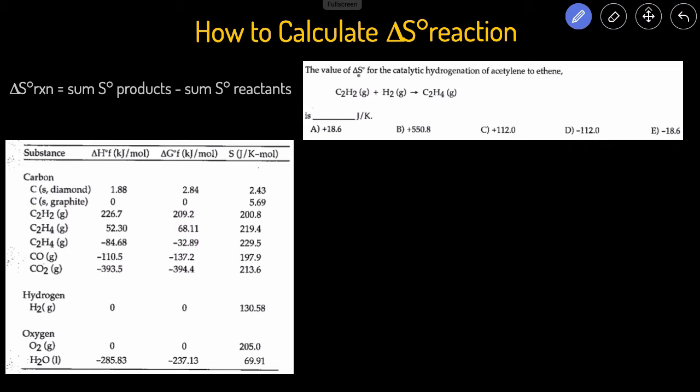And then we have to calculate the delta S or the change in entropy of the reaction. So we're going to start with the equation, products minus reactants. Let's start with the sum of the products. We do have to take into account the coefficient. We have one of the C2H4. We're going to multiply by the C2H4 value.